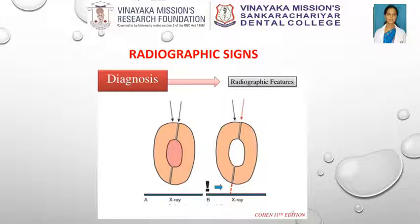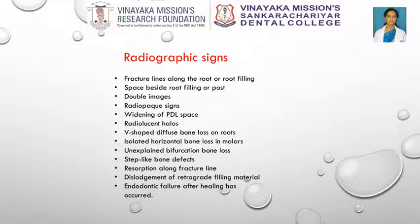While the clinical presentation of a vertical root fracture can be variable, radiographic signs are at times quite specific. These signs can vary considerably from case to case depending on the angle of the X-ray beam in relation to the plane of fracture. Unless the X-ray beam is parallel to the fracture line, the root fracture will not be revealed. Various radiographic signs include: fracture lines along the root or root filling; space beside root filling or post; double images; radiopaque signs; widening of periodontal ligament space; radiolucent halos; V-shaped diffuse bone loss on roots; isolated horizontal bone loss in molars; unexplained bifurcation bone loss; step-like bone defects; resorption along fracture line; dislodgement of retrograde filling material; and endodontic failures after healing has occurred.